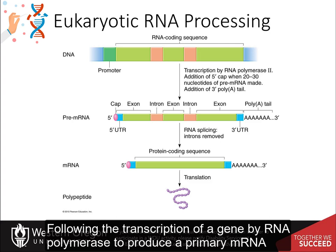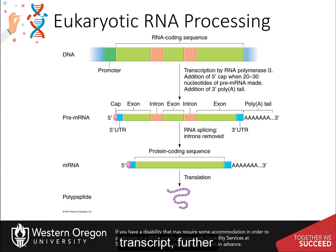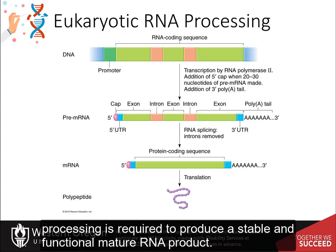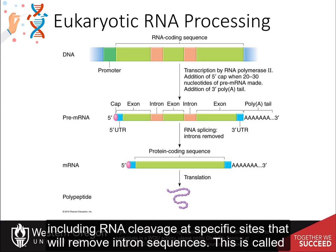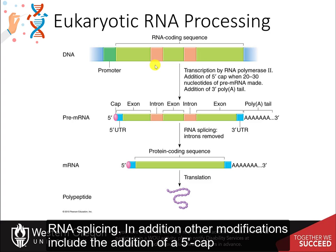Following the transcription of a gene by RNA polymerase to produce a primary messenger RNA transcript, further processing is required to produce a stable and functional mature RNA product. This involves various processing steps, including RNA cleavage at specific sites that will remove intron sequences. This is called RNA splicing.